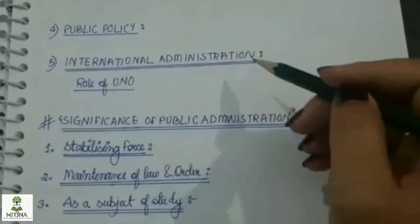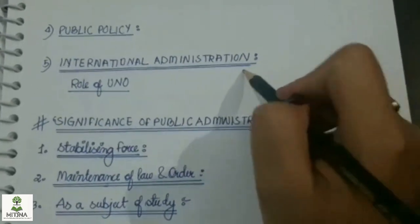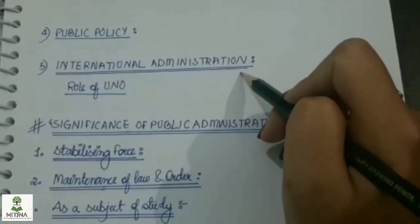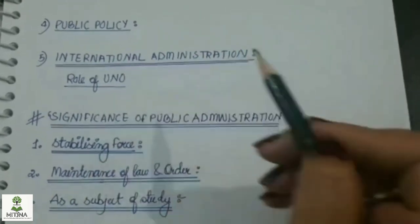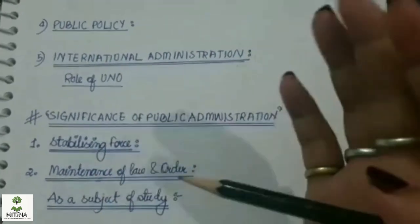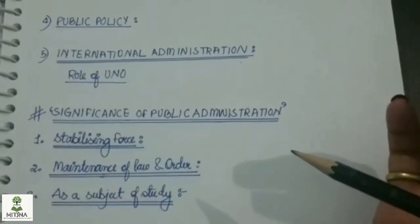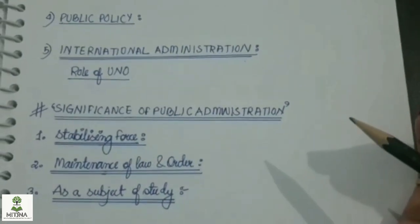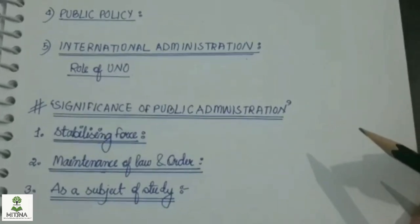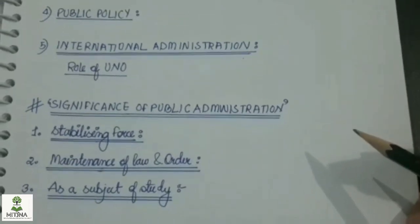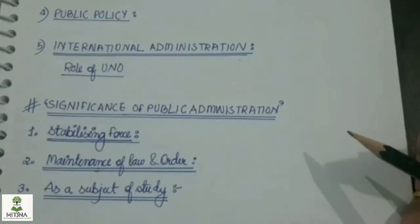Number five is international administration. The role of UNO, the United Nations Organization, includes efforts toward social and economic development to support international peace and security.